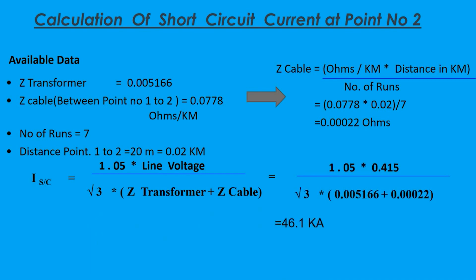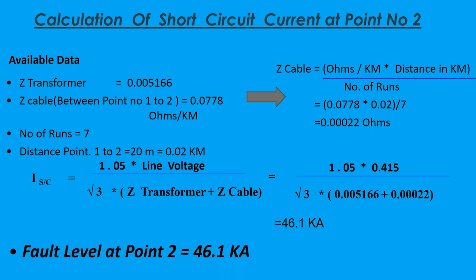ISC equals 1.05 times the line voltage, all divided by root 3 times Z transformer plus Z cable, that equals 1.05 times 0.415, all divided by root 3 times 0.005166 plus 0.00022, which equals 46.1 kilo amperes. So the fault level at point number two is 46.1 kilo amperes.